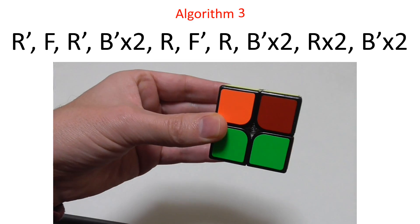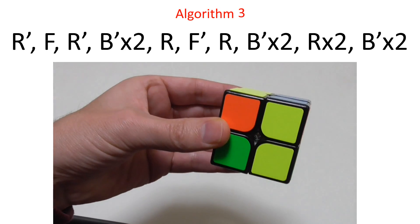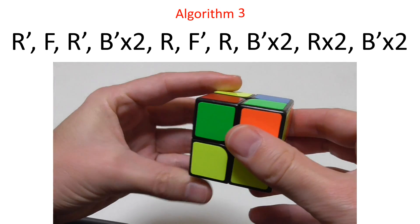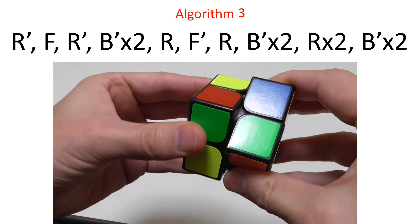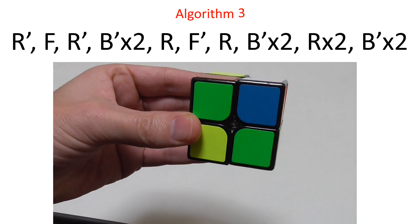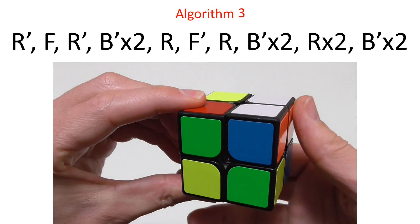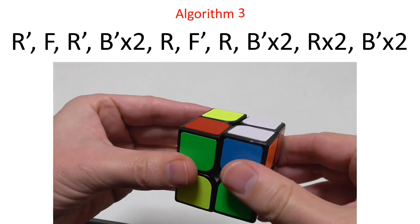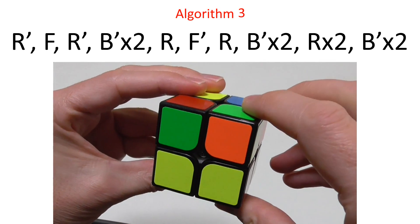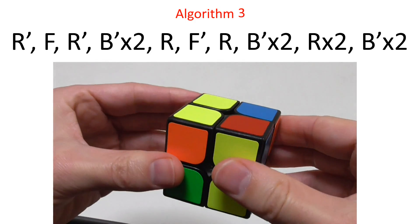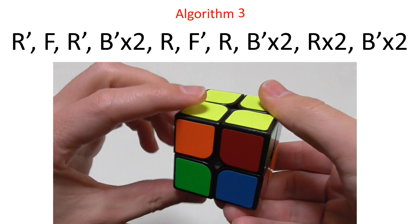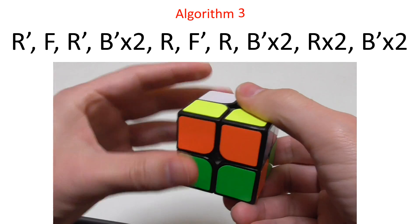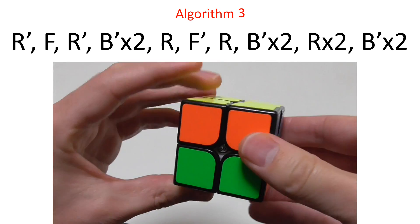So here we go. So it's right invert, front normal, not inverted. So that's clockwise. Right inverted. Back inverted twice. Inverted means, in this case, counterclockwise. Right. Front inverted. Right. Back inverted twice. Right twice. And that solved the bottom layer, the second layer.